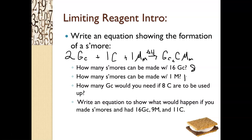The last question in this first series: how many graham crackers would you need if eight pieces of chocolate are to be used up? If you look at your chemical equation, for every one piece of chocolate you need two graham crackers. So if we have eight pieces of chocolate, we're going to need 16 graham crackers.